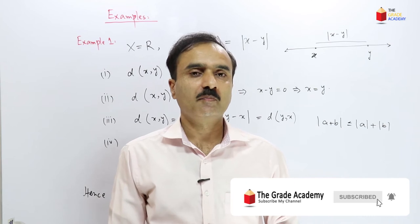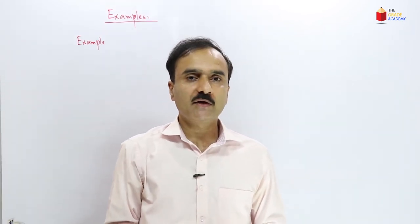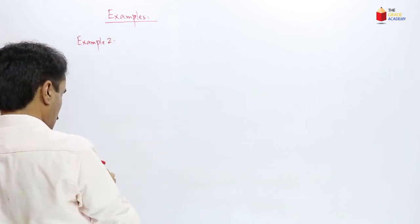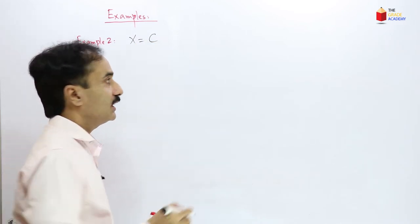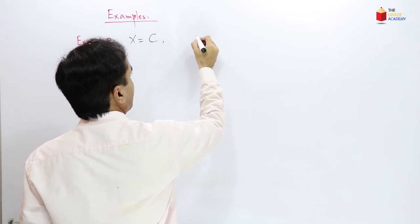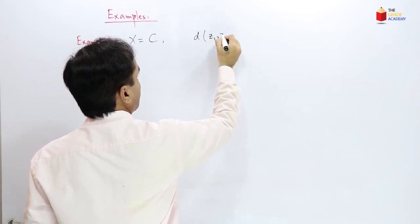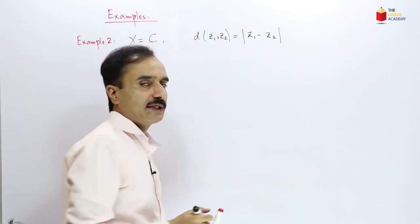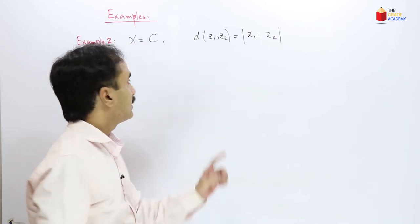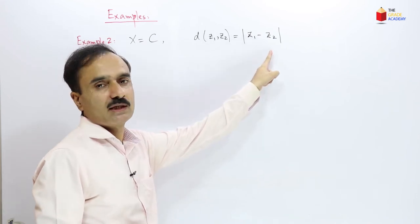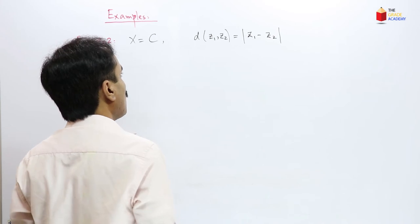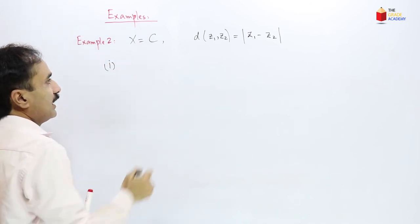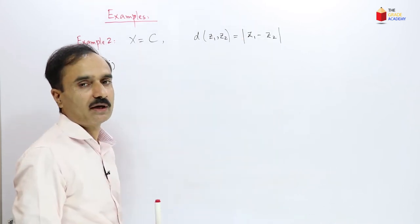Now let us consider another example of a metric space. The same kind of metric can be defined on the set of complex numbers. If we consider our set X equal to the set of complex numbers ℂ, and we consider the metric d(z₁, z₂) = |z₁ − z₂|, where z₁ and z₂ are any two complex numbers, we will see that the set of complex numbers with this metric is a metric space. Let us check all the axioms of the metric.